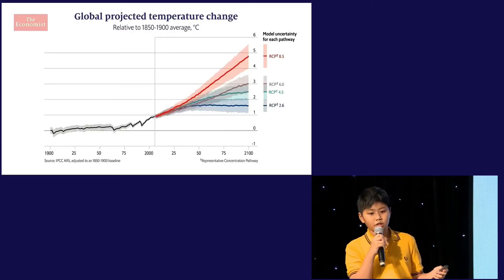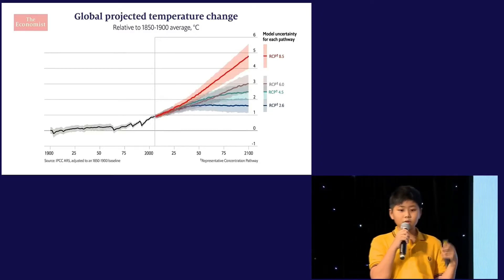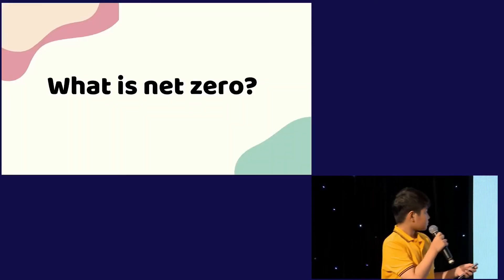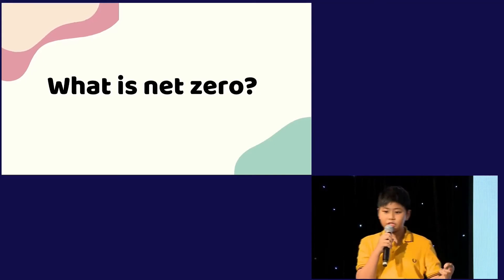All these extra heat melt glaciers, increasing heat levels, making the weather extreme, and increasing the ferocity of storms. To prevent that, we have to achieve net zero.